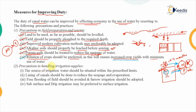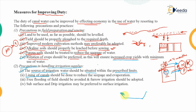The second set of methods for improving duty involves precautions in irrigation supplies. First, the source of irrigation water — the point from which irrigation water is discharged — should be situated within prescribed limits. If it is situated very far away, there will be higher losses and therefore lesser duty. So the source should be within a defined distance.